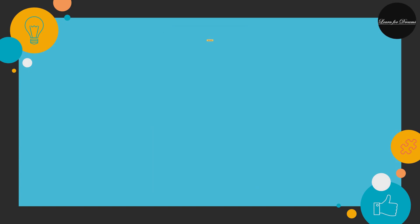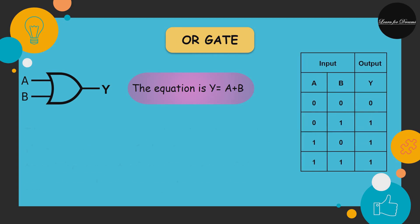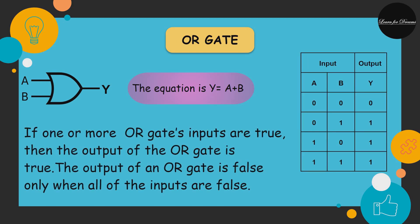Now the OR gate. If one or more OR gate inputs are true, then the output of the OR gate is true. The output of an OR gate is false only when all the inputs are false. The truth table is formed according to the equation Y = A + B.